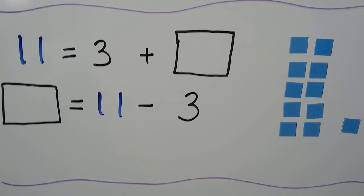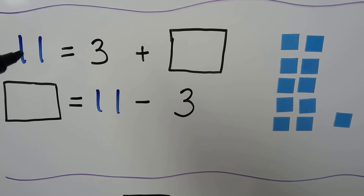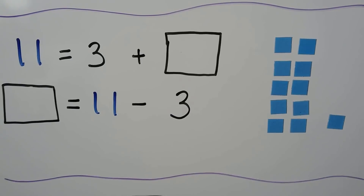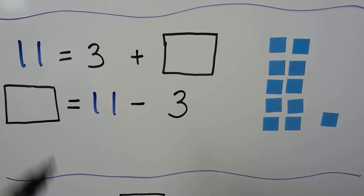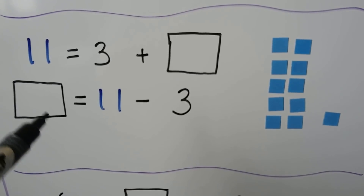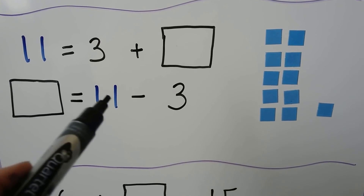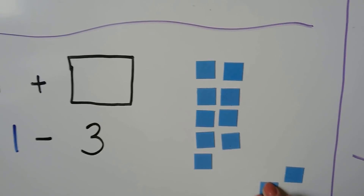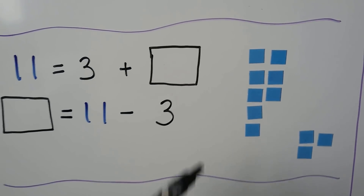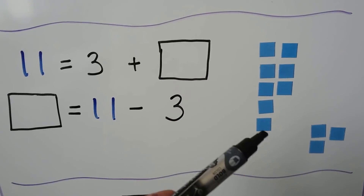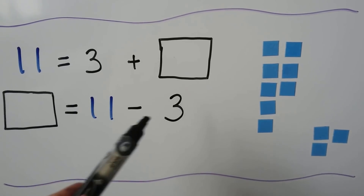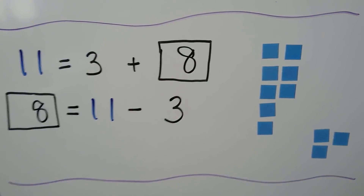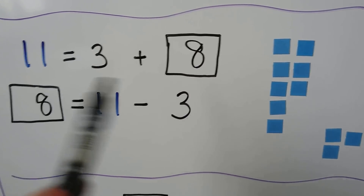Here we have 11 is equal to 3 plus an unknown number. Sometimes you'll see the sum and the equal sign at the front of the number sentence — that's okay. The unknown number is equal to 11 minus 3. If we have 11 counters and take three away — 1, 2, 3 — that leaves 1, 2, 3, 4, 5, 6, 7, 8. So 11 minus 3 equals 8, and 3 plus 8 equals 11. These are related facts using the same numbers — 3, 8, and 11 — in a different order.